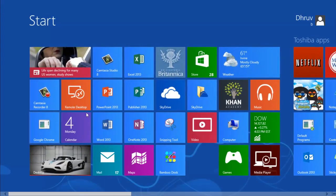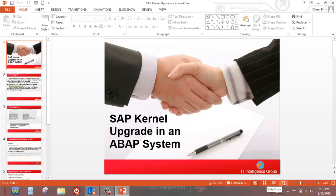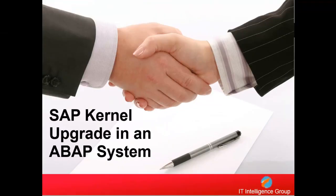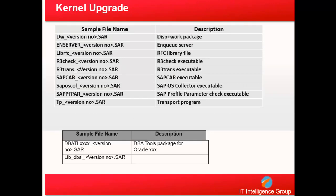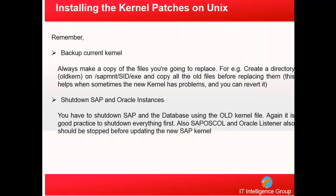Now let me go to the PPT and walk you through the next steps for kernel upgrades. This page shows how to download kernel files from SAP Marketplace, and some of the key files you see after extracting the kernel. Moving to the next page: some key things before applying kernel patches — the most important is to make sure you back up the kernel folder. The kernel folder is at two locations: /sapmnt/SID/exe and the kernel folder itself.